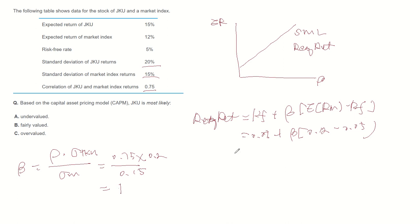Let's plug the numbers. Then required return becomes 0.05 plus 1 multiplied by 0.12 minus 0.05 equals 0.12.